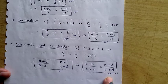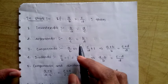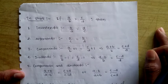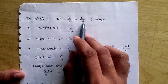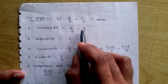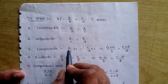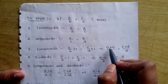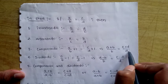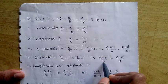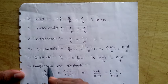This property is known as Componendo and Dividendo. Let's do a quick summary. If a/b = c/d, then: Invertendo → b/a = d/c. Alternendo → a/c = b/d. Componendo means a/b + 1 = c/d + 1, which gives (a + b)/b = (c + d)/d. Dividendo means a/b − 1 = c/d − 1, which gives (a − b)/b = (c − d)/d.